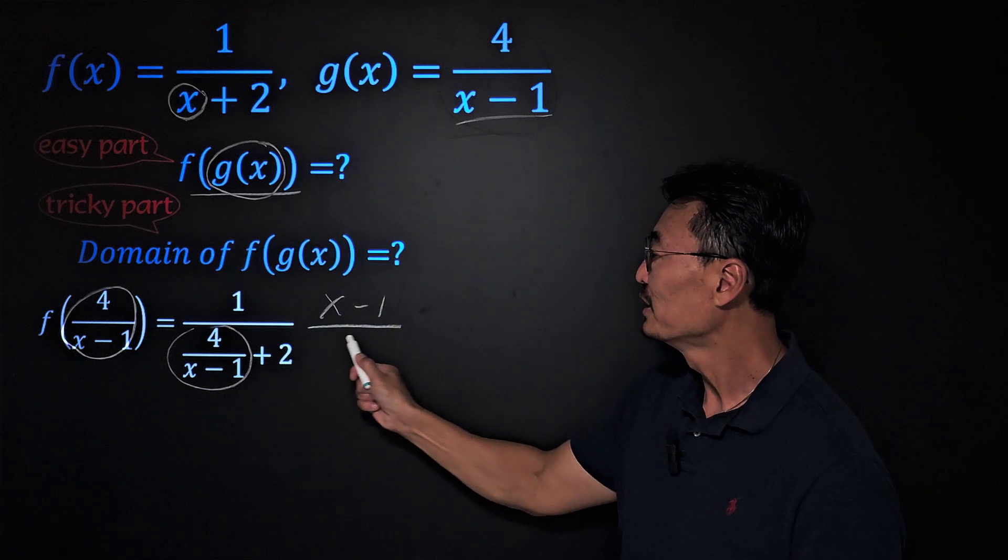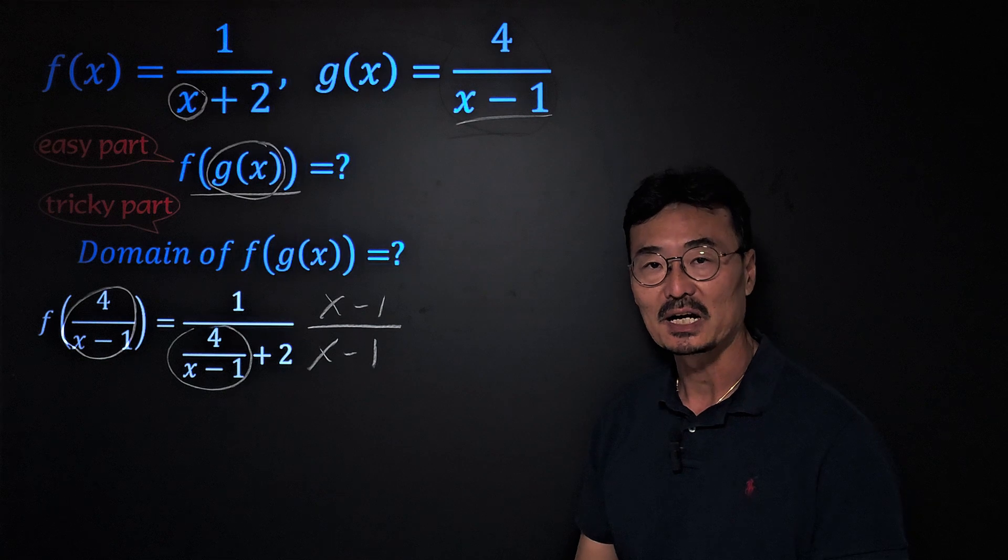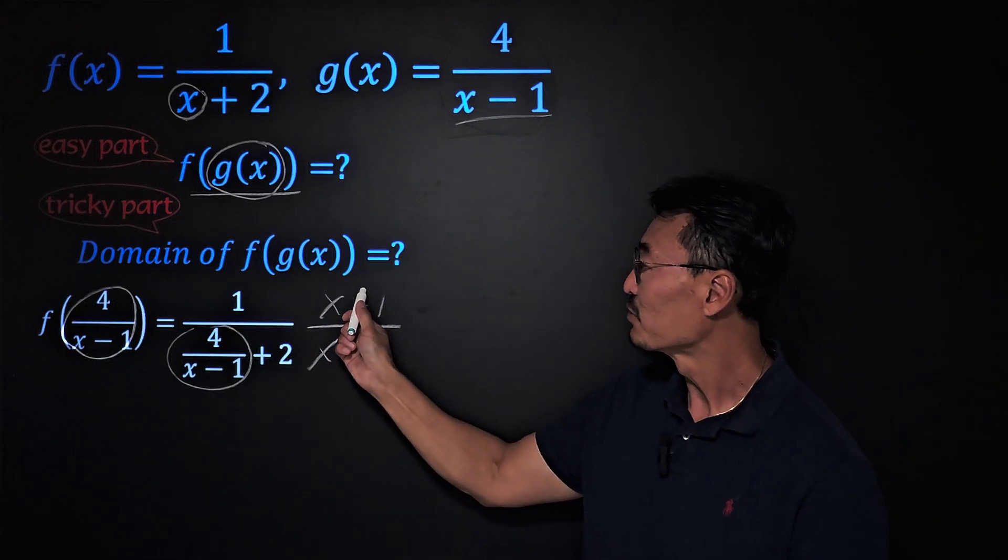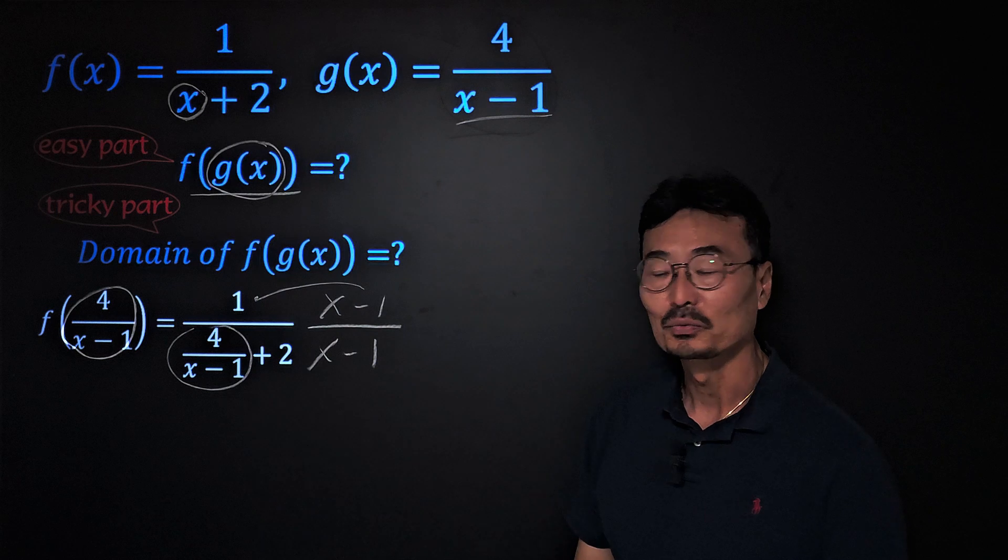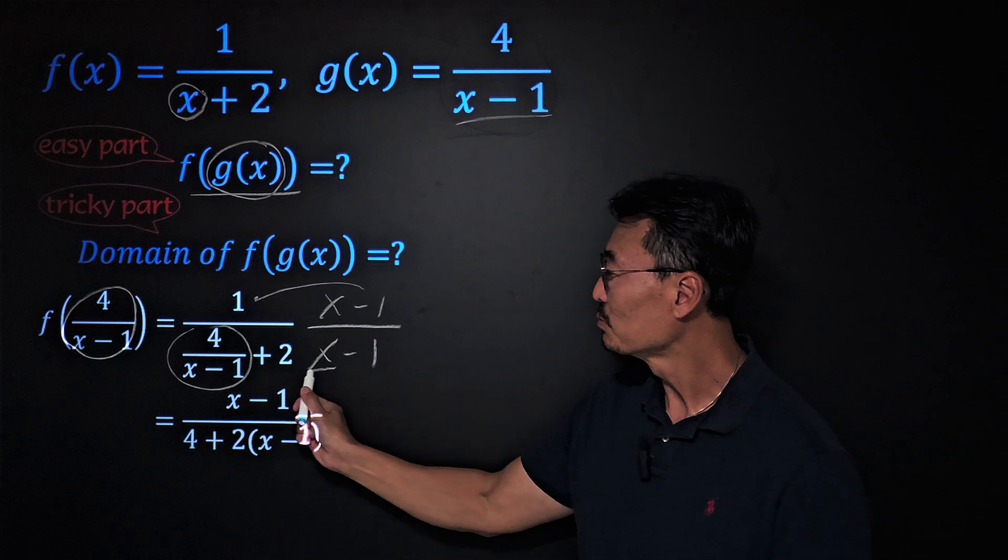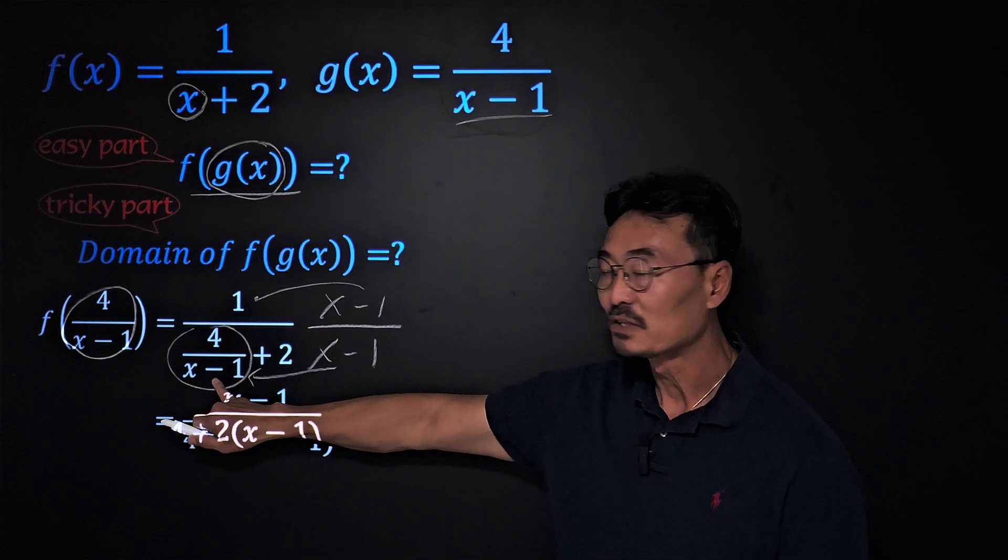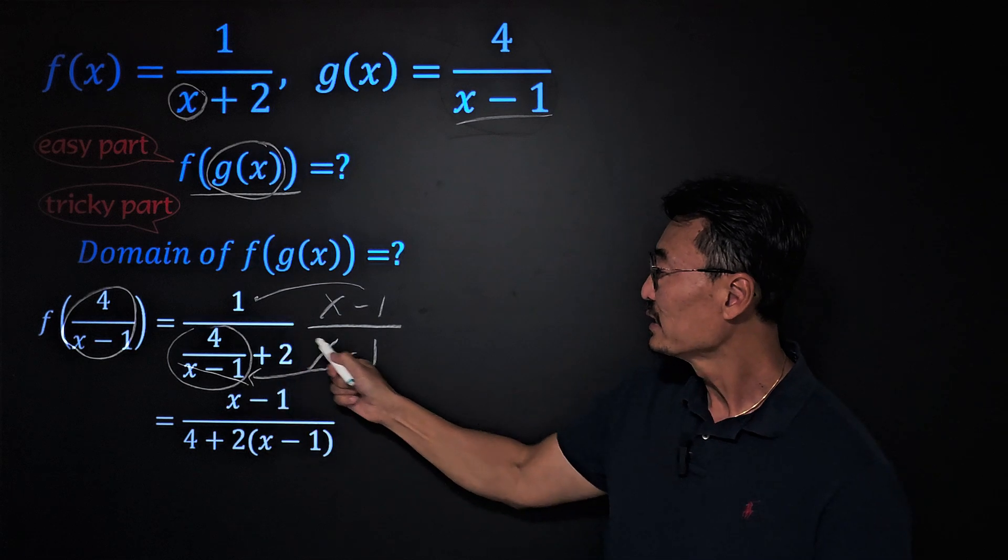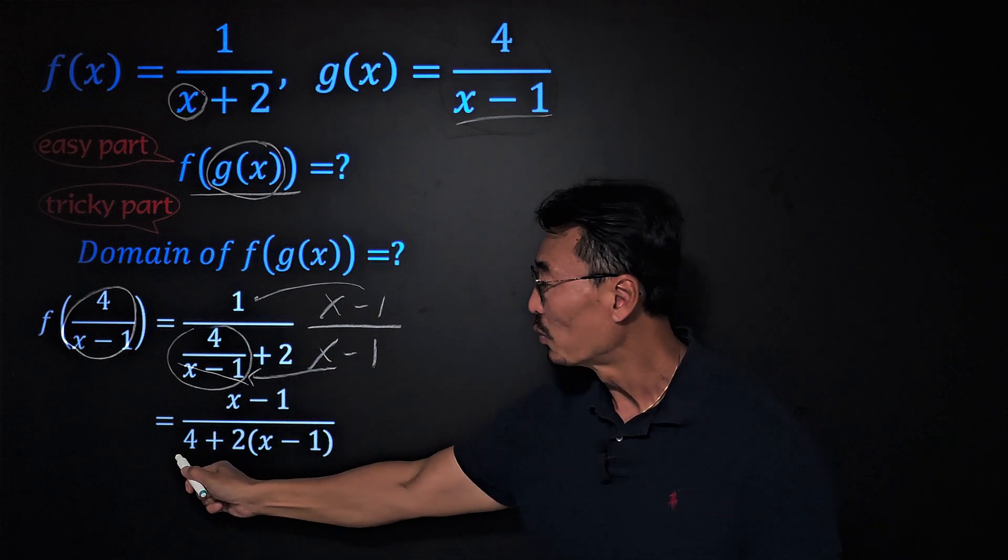To simplify this, we could multiply by (x-1) to the numerator and also (x-1) to the denominator. If I take that (x-1) to the numerator, we get simply (x-1). If I multiply (x-1) to 4/(x-1), the (x-1) terms cancel out and we're left with just the 4.